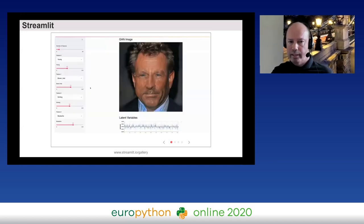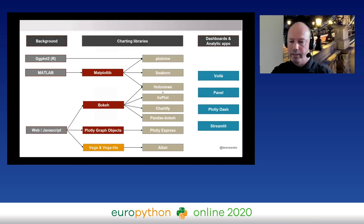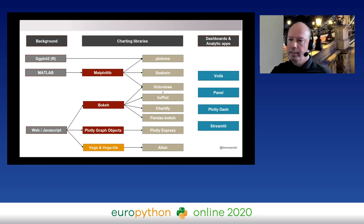Streamlit is described as the fastest way to build a machine learning app. For example, if you have a model generating images, you can wrap it in a Streamlit app where parameter controls on the left cause the image generation algorithm to rerun, giving you a new modified image. So our final map spans core low-level libraries giving you absolute control, higher-level wrappers making chart creation easier, and four dashboard and app frameworks — all worth checking out.